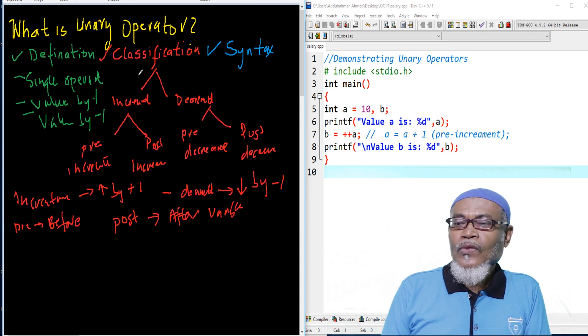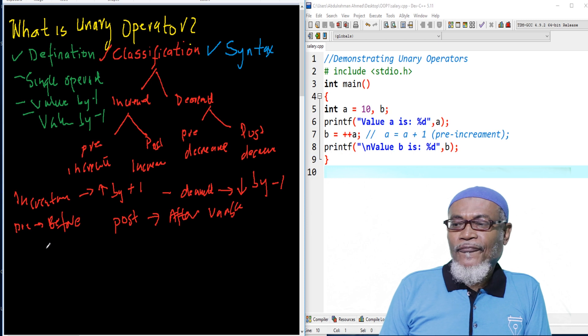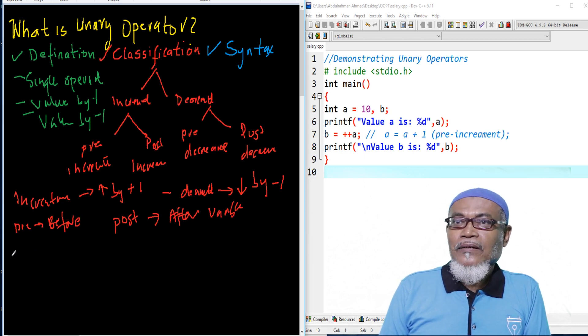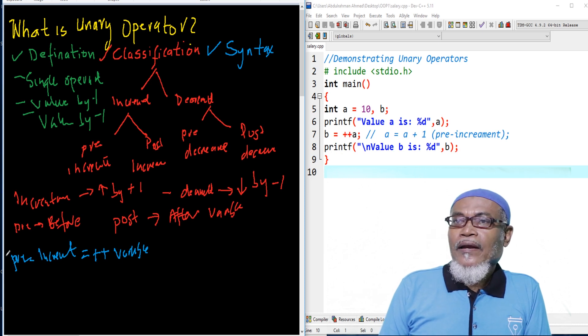Let's come to the syntax. So basically, if we are going to say pre-increment, the pre-increment syntax will be in a very simple manner. We are going to do it, so pre is before, so we are putting the new operator before the variable name. So, that will be the syntax of it.